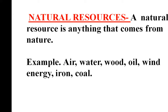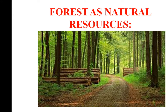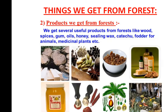Now let us see one important natural resource: that is forest. In today's class we are going to learn about forest as a natural resource. There are different things which we get from forest such as wood, spices, gum, different medicines, honey, different fruits, flowers, plants, vegetables, and medicinal plants. These are the different things which we get from forest.